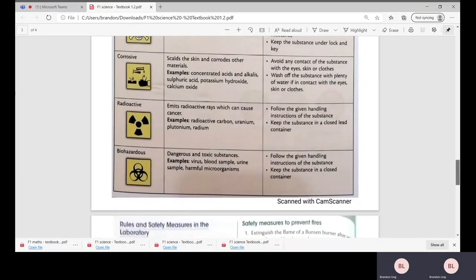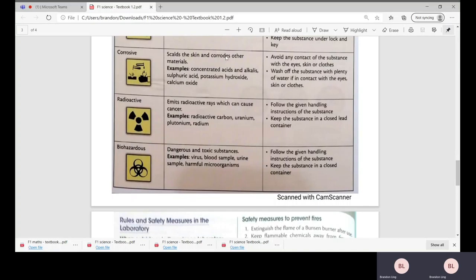Corrosive basically means that it can actually corrode other materials—it can corrode our benches, metals, wooden materials, and even scale the skin. Examples would be concentrated acids and alkalis. Whenever you get into contact with strong acids or alkalis, sulfuric acid in the lab, please remember to wash your hands immediately.